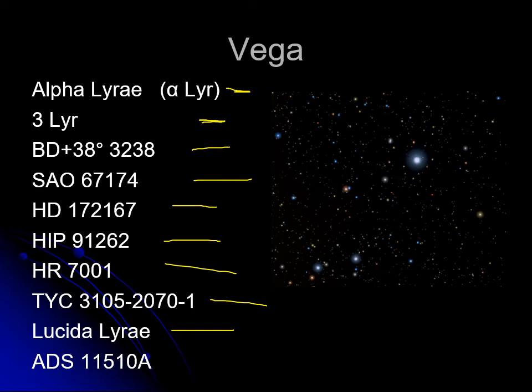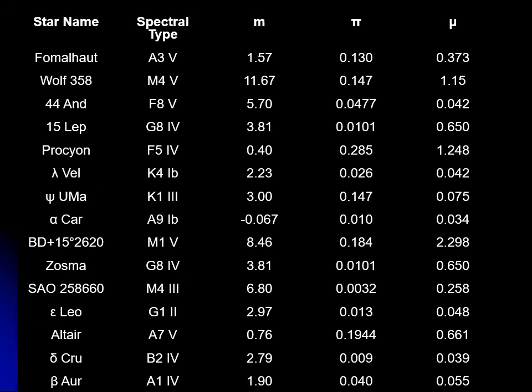No single person remembers all those catalog names, so there are online databases where you type in a star's name and it returns all the other names and catalog numbers that star is known by. The reason for so many designations is that sometimes you want to refer to a star one way, sometimes another, and sometimes you want consistent designation types across all stars in a research paper.